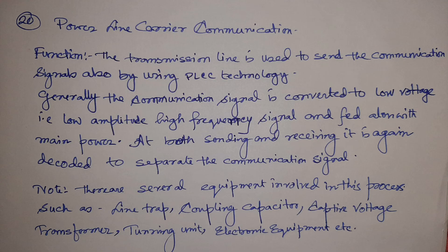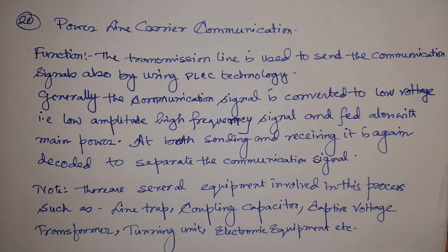Several filter and electronic arrangements are used to carry out power line carrier communication. The equipment used includes a wave trap or line trap, coupling capacitor, capacitive voltage transformer, tuning unit, and other electronic equipment. However, this is an older technology; nowadays OPGW — optical power ground wire — is used, where fiber optic cables are run through the shield wire. The communication signal is sent through the fiber optic cable, while the outer shield wire acts as the lightning protection element.